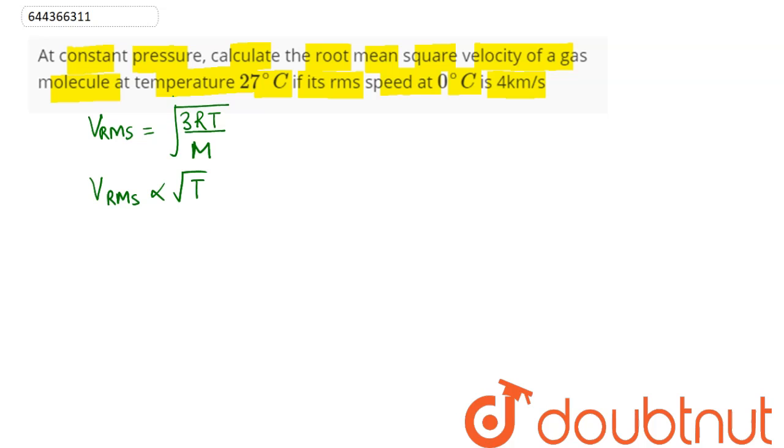We can see RMS velocity is proportional to square root of temperature. Since temperature is being changed, V1 by V2 comes as root T1 by root T2. Now speed at 0 is 4 kilometer per second, we have to find at 27 degree Celsius what will be the RMS speed.